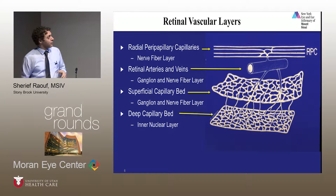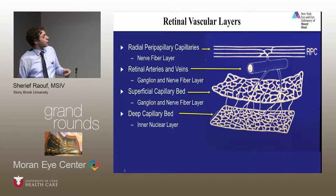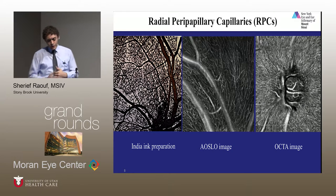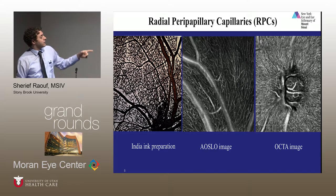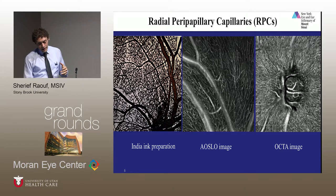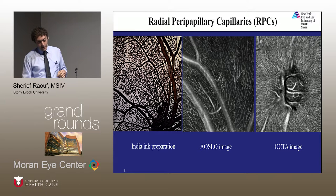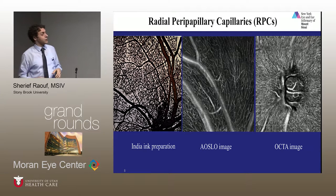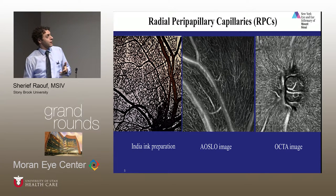Depending on the depth of focus selected, OCTA can image various vascular beds in the retina, including the choriocapillaries. Until recently, the RPC network has been mostly visualized through histopathology and ex vivo analysis, demonstrated here with an India ink preparation. Advanced optics scanning has also captured fine details of this capillary network, but can be somewhat limited. A recent study compared OCTA and adaptive optics, and the thinking is that OCTA allows for better visualization while being somewhat easier for both the healthcare provider and the patient.